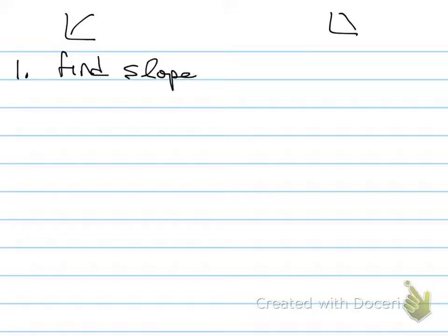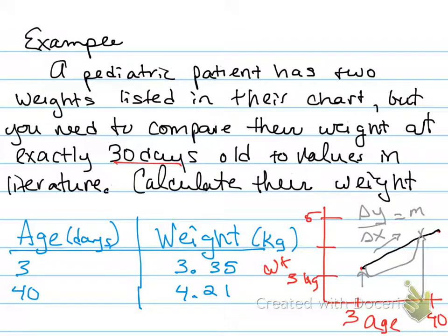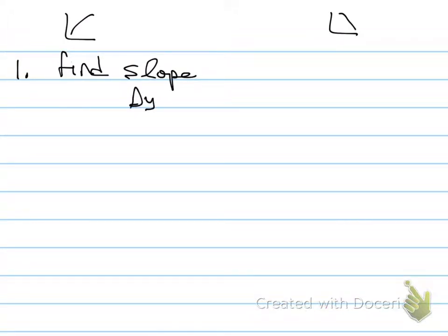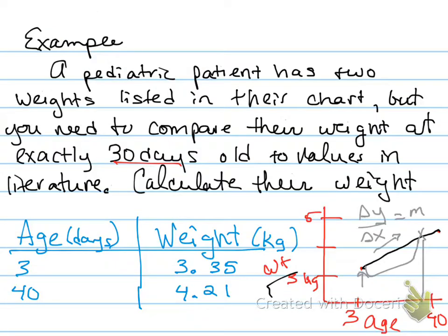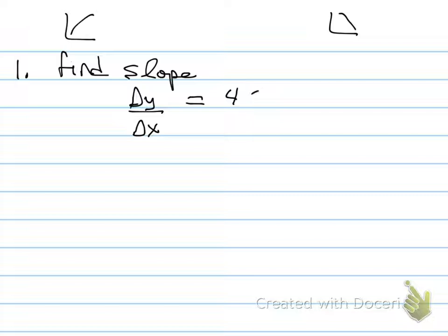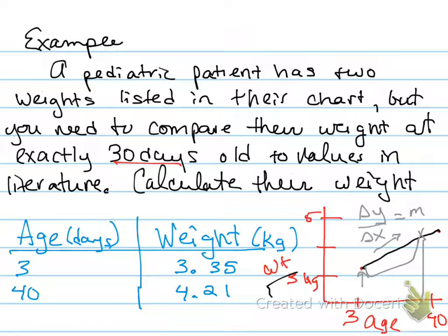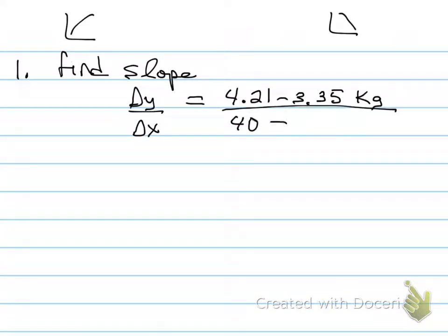And that's just going to be the difference in your two measurements. So in the case of the age of the toddler and the weight, we put weight on the Y axis, so we'll subtract those two first. So the change in the weight is 4.21 minus 3.35 kilograms. And then the change in the X axis is the change in age, so that's 40 minus 3. I want to make sure to get these aligned properly. So this is one data set, and this is the second data set. It's important that those are subtracted in the same kind of order in both cases.